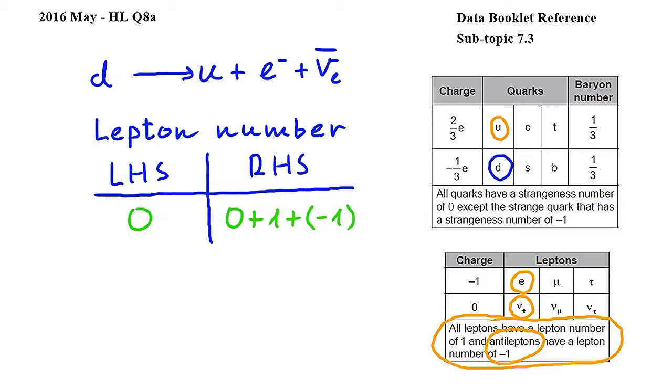Adding up the values on the right-hand side, we get zero, which means that the left-hand side and the right-hand side of the equation are equal. Hence, we can conclude that lepton number is conserved.